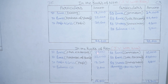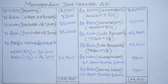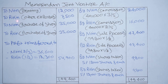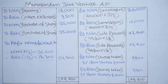Now let's understand the Memorandum Joint Venture Account. Double entry system does not apply to this account. All expenses of Nitin and Rikin are written on the debit side, and all income and receipts are written on the credit side. Debit entries: To Nitin — Printing and Advertising Rs 12,000; To Rikin — Other Expenses Rs 7,500; To Nitin — Purchase of Shares Rs 35,000; To Rikin — Purchase of Shares Rs 35,000.